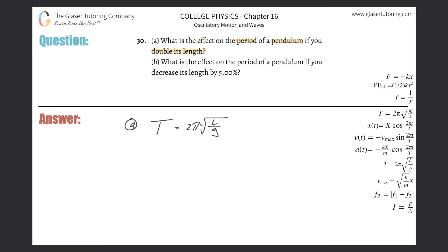So the question is asking, what happens if we double the length here? How will the period change? Basically, all you have to do is plug in a value of 2, because that will represent a doubling of the length. We can simply plug in a value of 2 into this fraction.